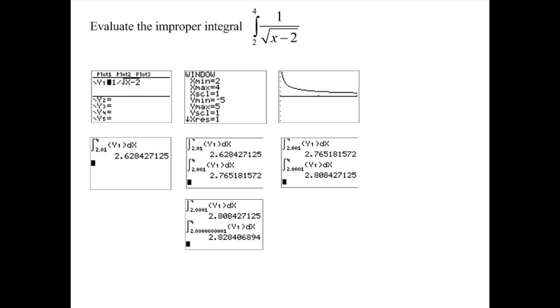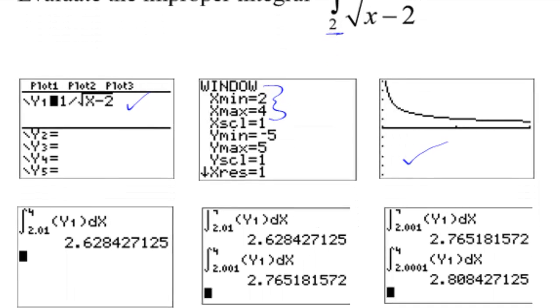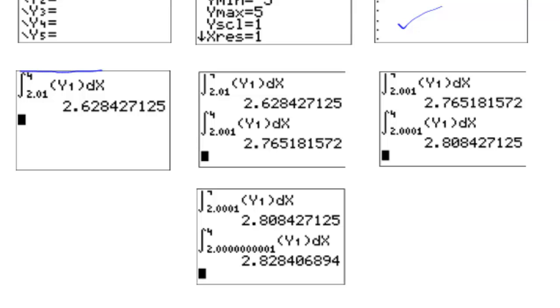Another example where we have a vertical asymptote, again, at the lower limit of integration. This function is not defined where x equals 2. So I'm going to do the same thing. Put it into y1. Now I have changed my x window from 2 to 4. That's where I got that picture from. And instead of using limits very close to 0, clearly I want to use limits very close to 2. Specifically, approaching 2 from the right because I need to be inside the interval, remember. And so I have 2.628.